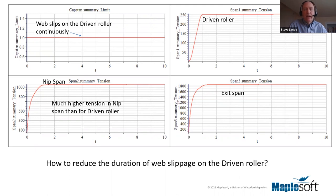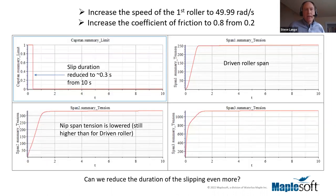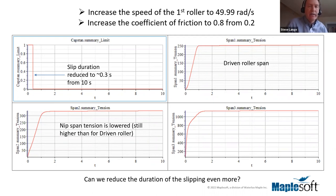To reduce that slippage, we increased the speed of the initial roller and considerably increased the coefficient of friction on that roller — simulating, say, a new coating. Now looking at the capstan summary limit, the slip duration instead of being the full 10 seconds is more like a third of a second — a considerable improvement. The tensions in the two spans are now much more similar: a little over 300 Newtons for the nip span and about 250 for the other.